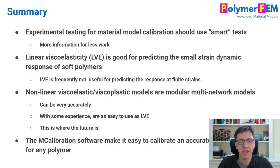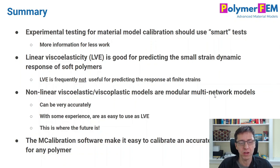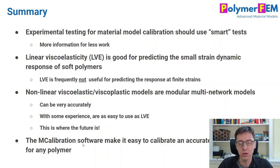To summarize: experimental data is critical, and I always recommend smart testing to get more information for less work. Linear viscoelasticity can work well in some cases but is not accurate for large deformations and finite strains. Under those circumstances, switch to non-linear viscoelasticity — the multi-network representation — which is just as easy to use and much more accurate. The mCalibration software makes it straightforward to work with these non-linear viscoelastic materials. Visit polymerfem.com if you have any questions. Thank you.